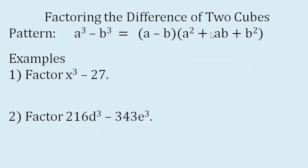Factoring the difference of two cubes has this pattern: A cube minus B cube equals the quantity A minus B times the quantity A squared plus AB plus B squared. Notice again that we have one binomial factor and one trinomial factor.